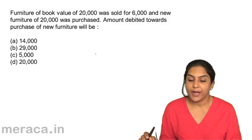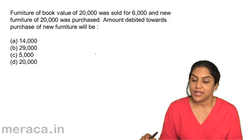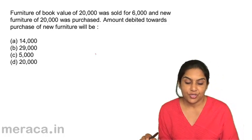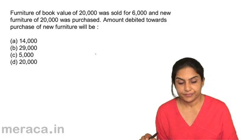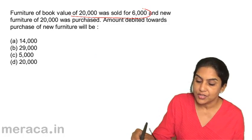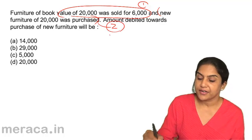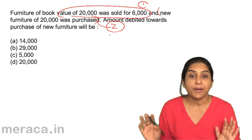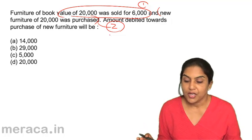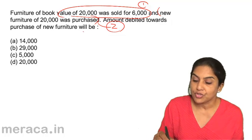Furniture of book value 20,000 was sold for 6,000. New furniture of 20,000 was purchased. The amount debited towards purchase of new furniture will be: A. 14,000, B. 29,000, C. 5,000, D. 20,000. These are two separate transactions — we will pass two entries and not combine them. The furniture being sold is different from the furniture being bought.